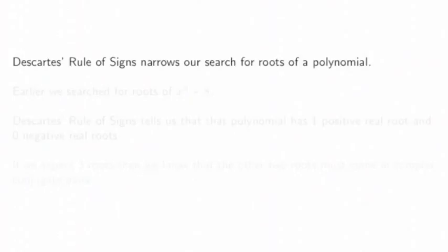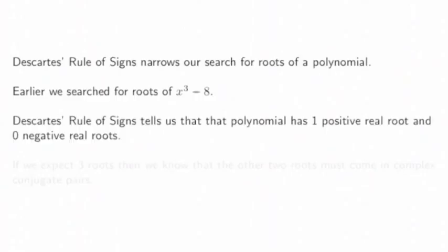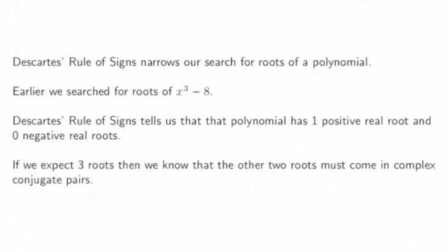Descartes' rule of signs narrows our search for roots of a polynomial. Earlier, we searched for roots of x³ - 8. And Descartes' rule of signs said it had one positive real root. We were told it had one positive real root and we discovered it had no negative real roots. If we expect three roots from this polynomial, then we know that the other two roots must come in complex conjugate pairs. So Descartes' rule of signs tells us pretty much everything we need to know about this polynomial. It has one positive root, no negative ones, and two complex ones.